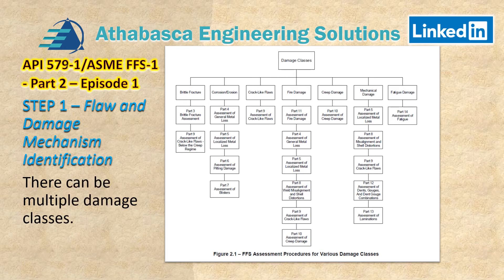Returning to Figure 2.1 — this is actually part of step one, the flaw damage and mechanism identification, and is used to determine that. For example, there could be a Part 6 damage, and there could also be issues like assessment of misaligned or shallow deteriorations covered in Part 8, depending on locations. The art of doing the analysis is combining these parts together.